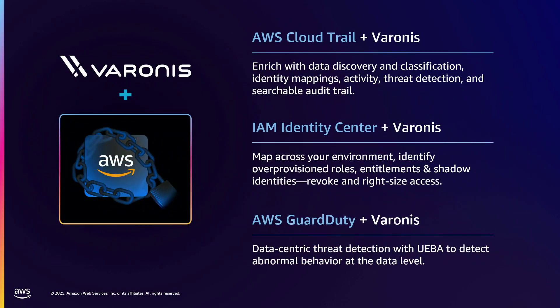Varonis is a force multiplier for the security capabilities and technologies that you get in your AWS environment. We leverage your CloudTrail, we leverage the Identity Center, we leverage GuardDuty. We take the telemetry from your AWS environment, combine it with telemetry from the other hyperscalers and other data sources, give you a single data classification engine across your entire environment, and give you automation from a single platform to fix these problems — ensuring you're getting the most possible value from the security capabilities within AWS and in the other environments you're using.